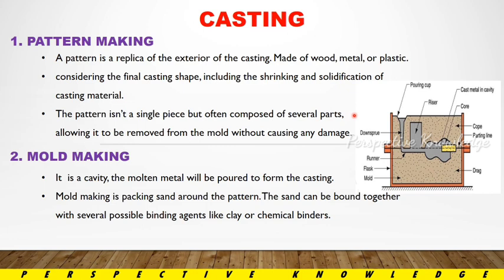So we will make the replica, and we can use molten metal, and the shape of the metal will be poured to form the casting. Mold making is packing sand around the pattern. The sand can be bound together with several possible binding agents like clay or chemical binders. We will use the replica pattern and the sand or chemical binders to make the product — that is mold making.